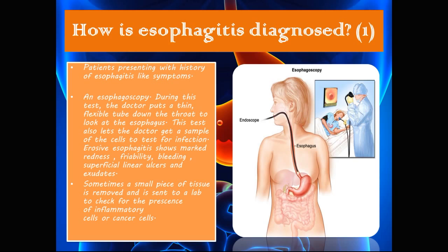Esophagitis is diagnosed first by considering the patient's presenting symptoms, typically heartburn, acid reflux, and dysphagia. An esophagoscopy — a thin flexible tube placed down the throat into the esophagus — allows the gastroenterologist to visualize erosive esophagitis showing marked redness, friability, bleeding, superficial linear ulcers, and exudates. A small piece of tissue may also be biopsied and sent to a lab to check for inflammatory cells or cancer cells.